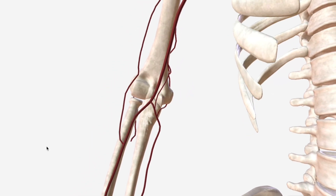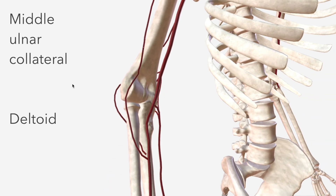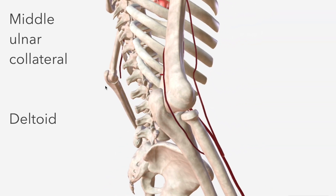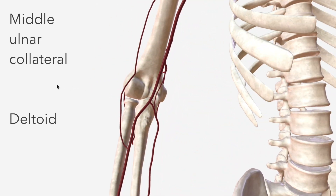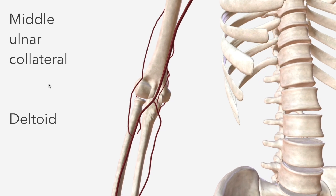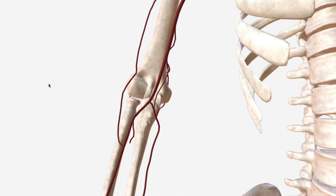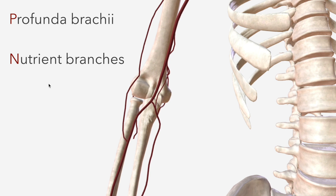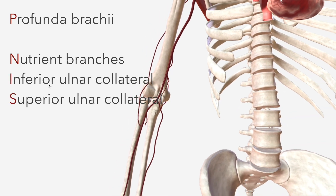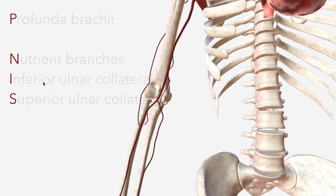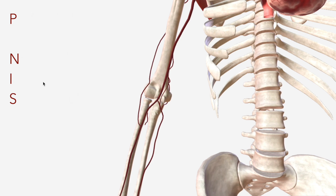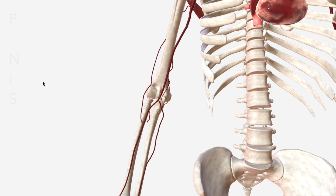So we've got these four major branches. There are two others mentioned in some anatomical texts — the middle ulnar collateral and the deltoid artery — but the majority of texts don't mention these at all. So we're focusing on just four branches: the profunda brachii, the nutrient branches, the superior ulnar collateral, and the inferior ulnar collateral, forming the mnemonic PENIS. Let's just move on — I'm sure that one will stick with you.